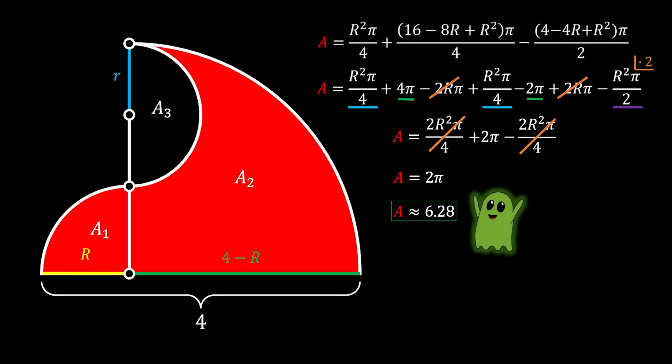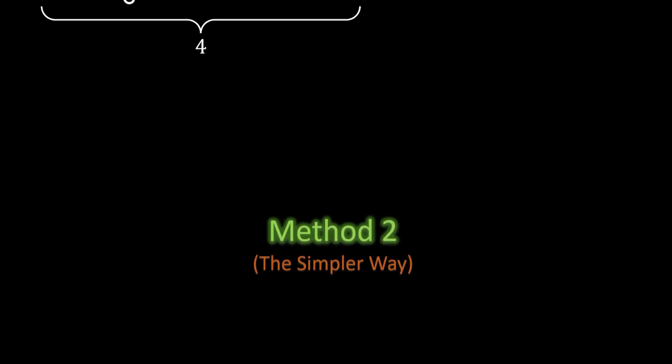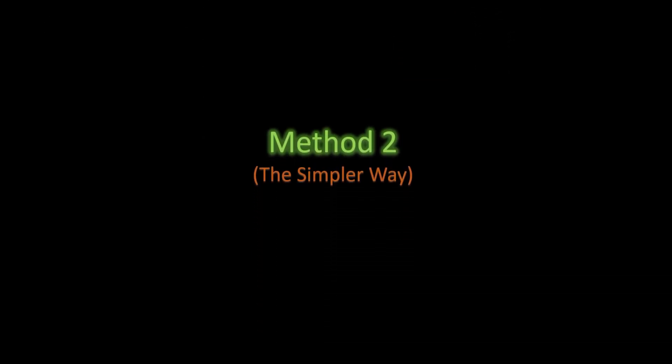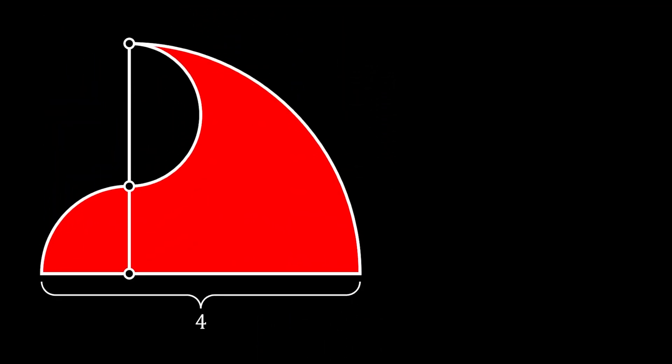And that is our solution. All right, let's now try method number two, the simpler way of doing this task. In order to do this, we are going to again mark all our points as O, A, and B as we did before. Now let's notice that point A is an arbitrary point — it only depends upon the dimensions of the small half circle. So let's play around with it a little bit and put point A directly at the center of the line OB.